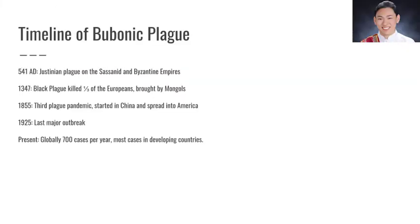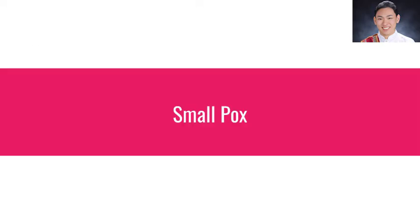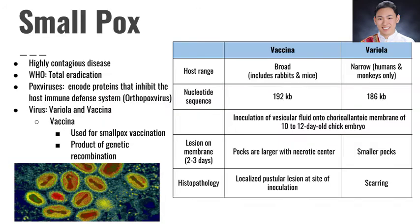As said before, there have been three plagues caused by Yersinia pestis. The next disease is smallpox, which is caused by the viruses variola and vaccinia.